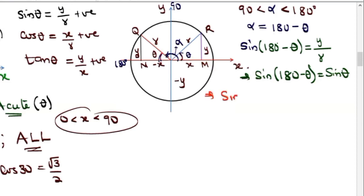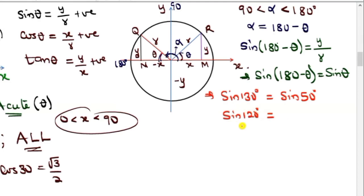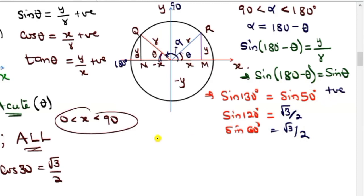So if we are given an angle in the second quadrant, say 130 degrees, sine 130 is the same as sine of 180 minus 130, which is sine 50. As another example, sine 120 equals sine 60 — and using your calculator or four-figure table, sine 120 equals root 3 over 2, confirming this. Sine is positive in the second quadrant.